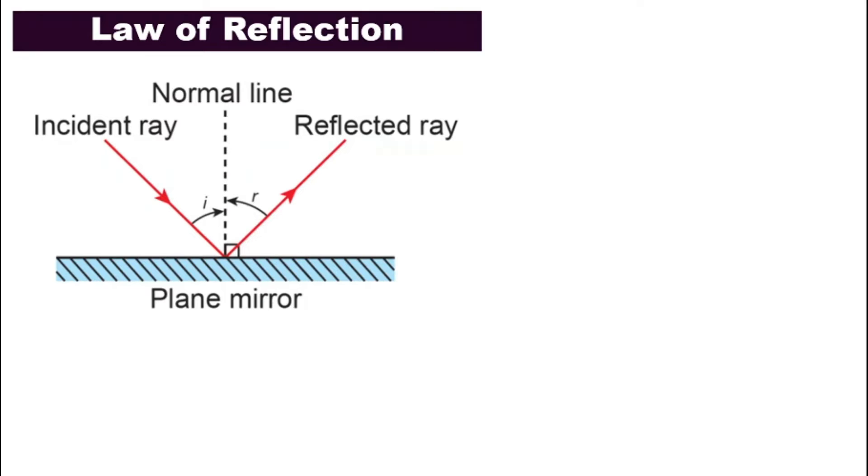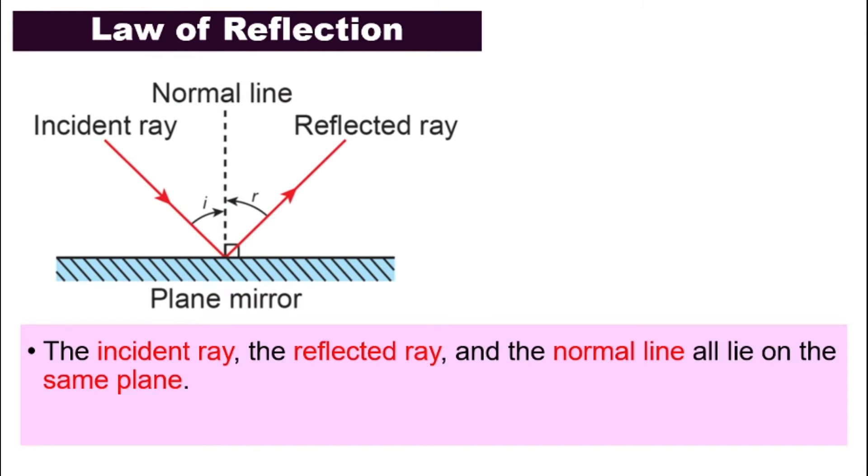Now we will look at the law of reflection. What is the law of reflection? It can be explained by using this diagram. Look at the diagram. The law of reflection says that the incident ray, the reflected ray, and the normal line, they all lie on the same plane. That means they are all on the same line.